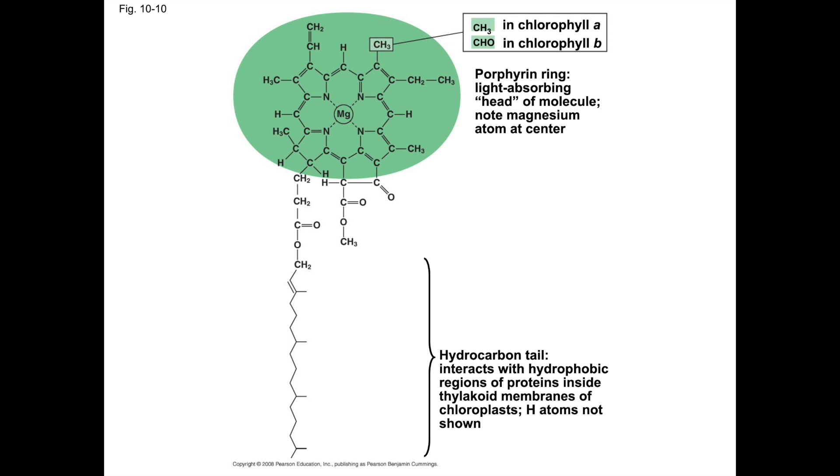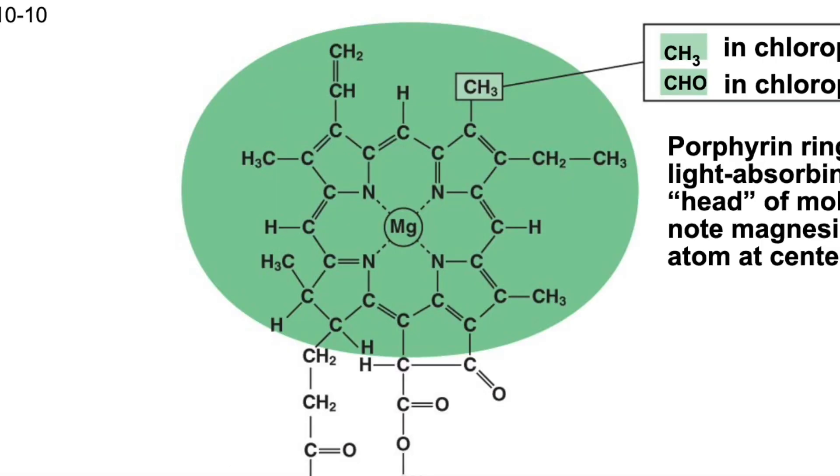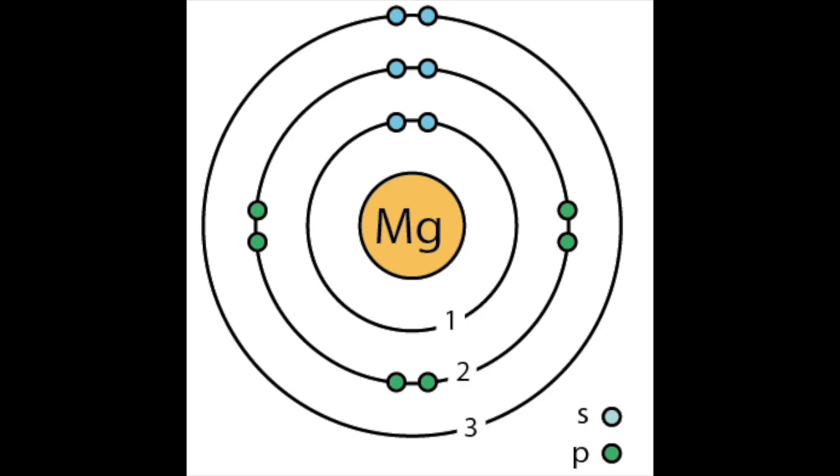The important thing is the magnesium atom. If you remember looking at a magnesium atom in a Bohr diagram in general chemistry, you'd note that it has 12 electrons distributed across three energy levels: two in the first, eight in the second, and two in the third energy level. When light energy interfaces with this magnesium atom, it can excite one of these electrons.